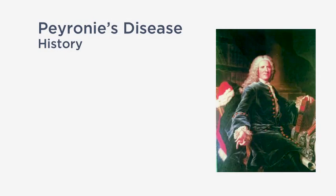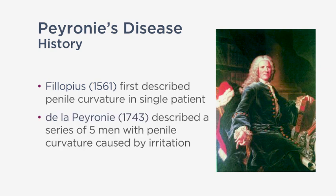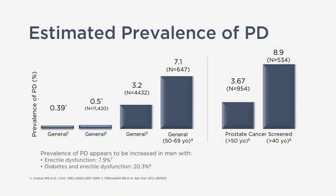Peyronie's disease has been described over centuries. One of the first descriptions was in the 1500s. It wasn't until 1743 when François de la Peyronie described this condition in five men. The prevalence of Peyronie's disease is actually quite higher than most think — roughly 7% of all men have it.